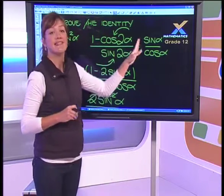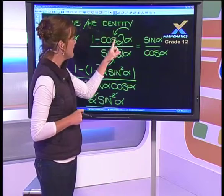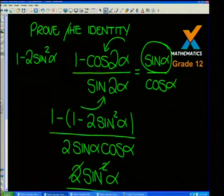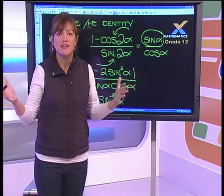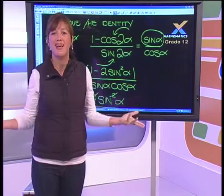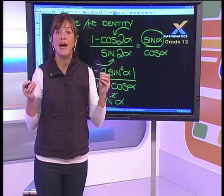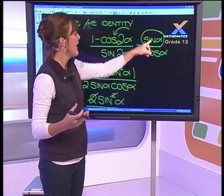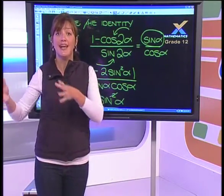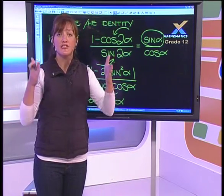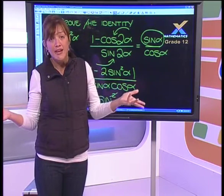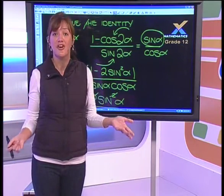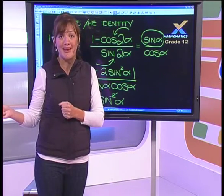A key tip: when you have a cos double angle in an identity, look carefully at what you're trying to prove. If the target expression only contains sine, use 1 minus 2sin²α. If it only contains cosine, use 2cos²α minus 1. If the right-hand side has a combination of sines and cosines, use cos²θ minus sin²θ.